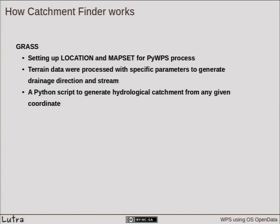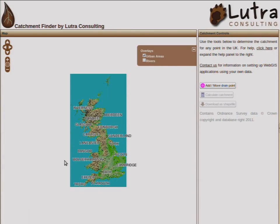To start development, the first thing was to include all the data inside the GRASS database. We set up a location and mapset, imported the data, pre-processed it, and did quality analysis. Since we already had all the analytical procedures developed for water engineering modeling, we converted those procedures into a Python script to be called by PyWPS, and everything was set up to test the web processing service.